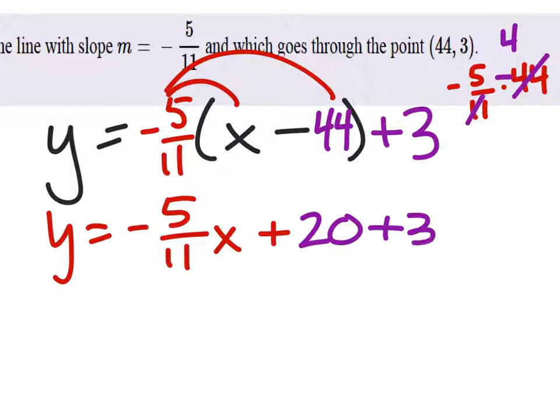That works out pretty good, because then we don't have to actually add fractions there. So y equals negative 5 elevenths x plus 23.